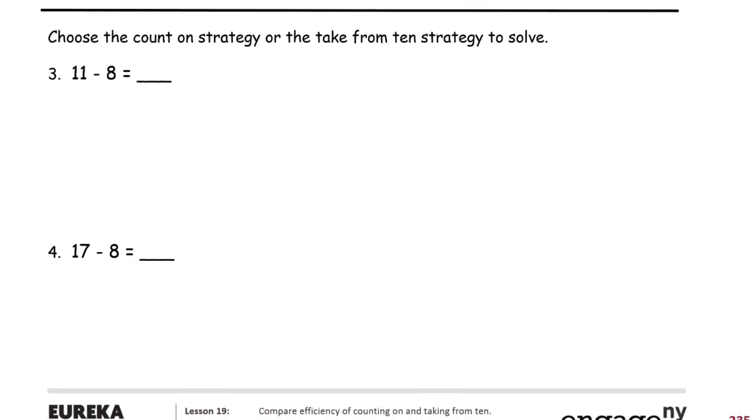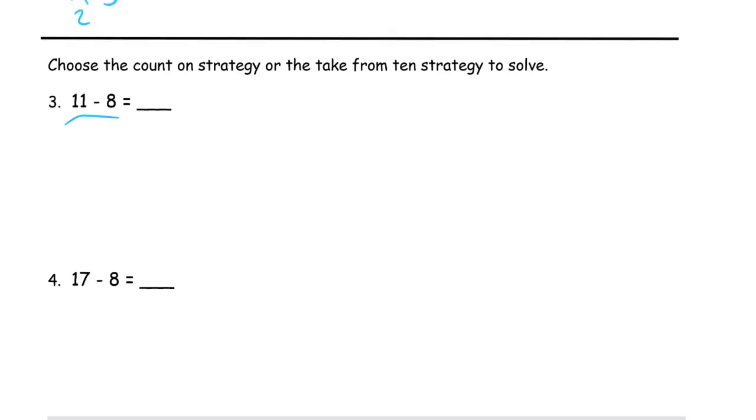Choose the count on strategy or the take from 10 strategy to solve. So I recommend that if the numbers are close, count on. But if they're not close, then take from 10. So 11 and 8, they're pretty close. So we're going to count up from 8. That would be 9, 10, 11. That's 3 numbers. So our answer is 3.